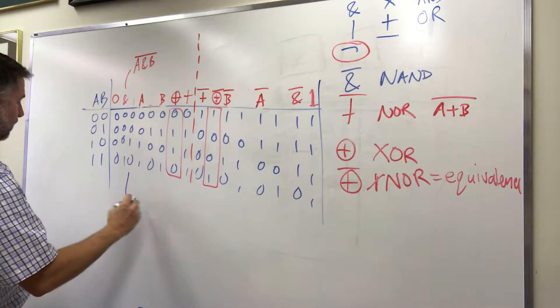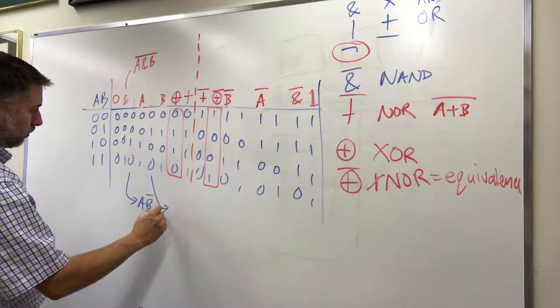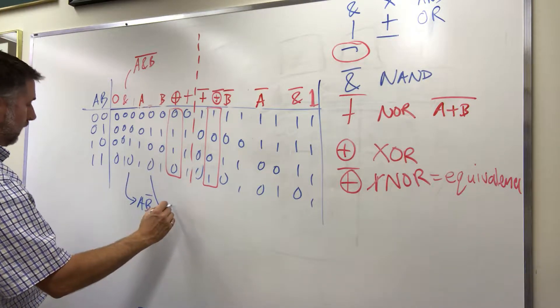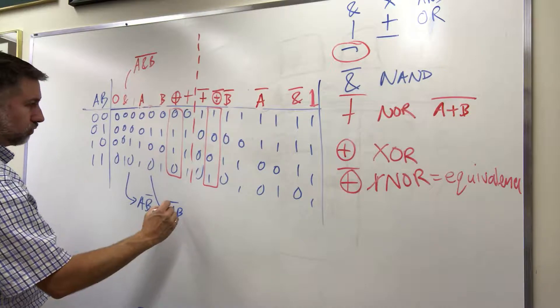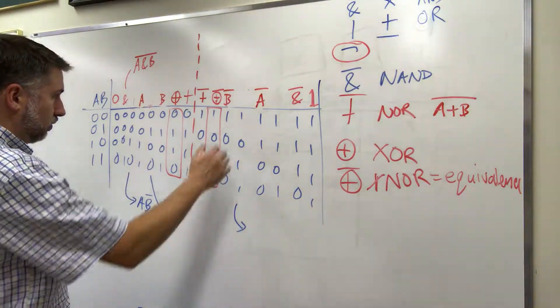This one is true only if a is true and b is false. This one is true only if a is false and b is true. This one is true, only, this one is false.